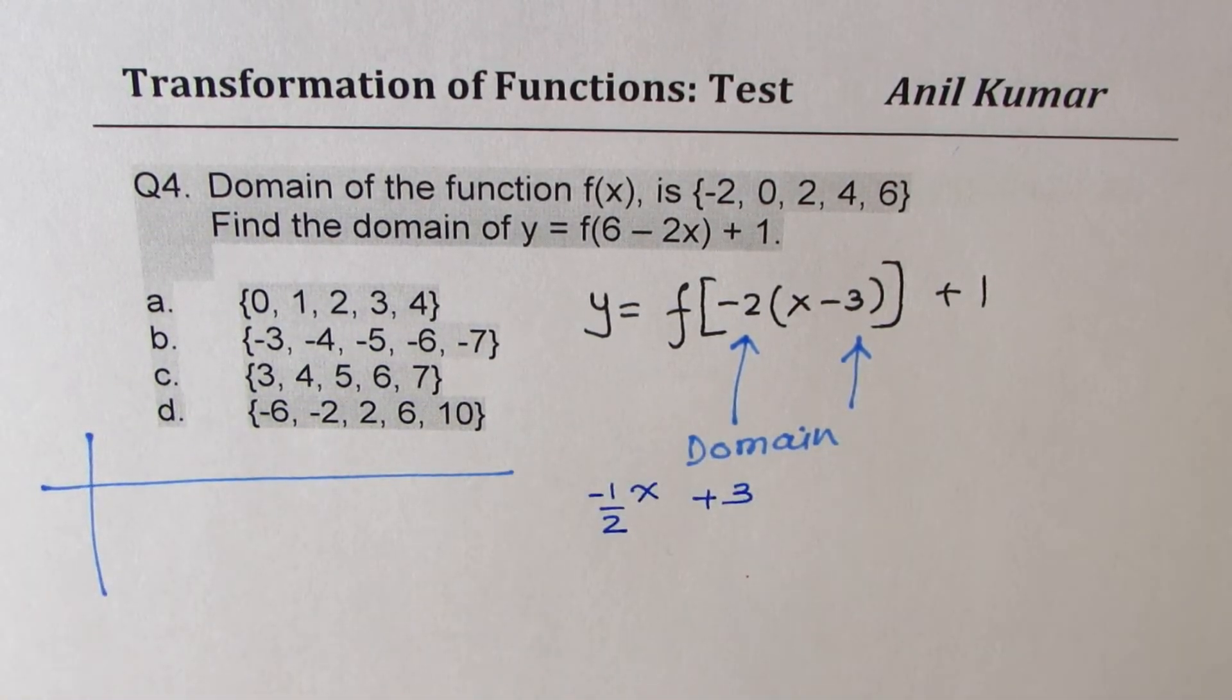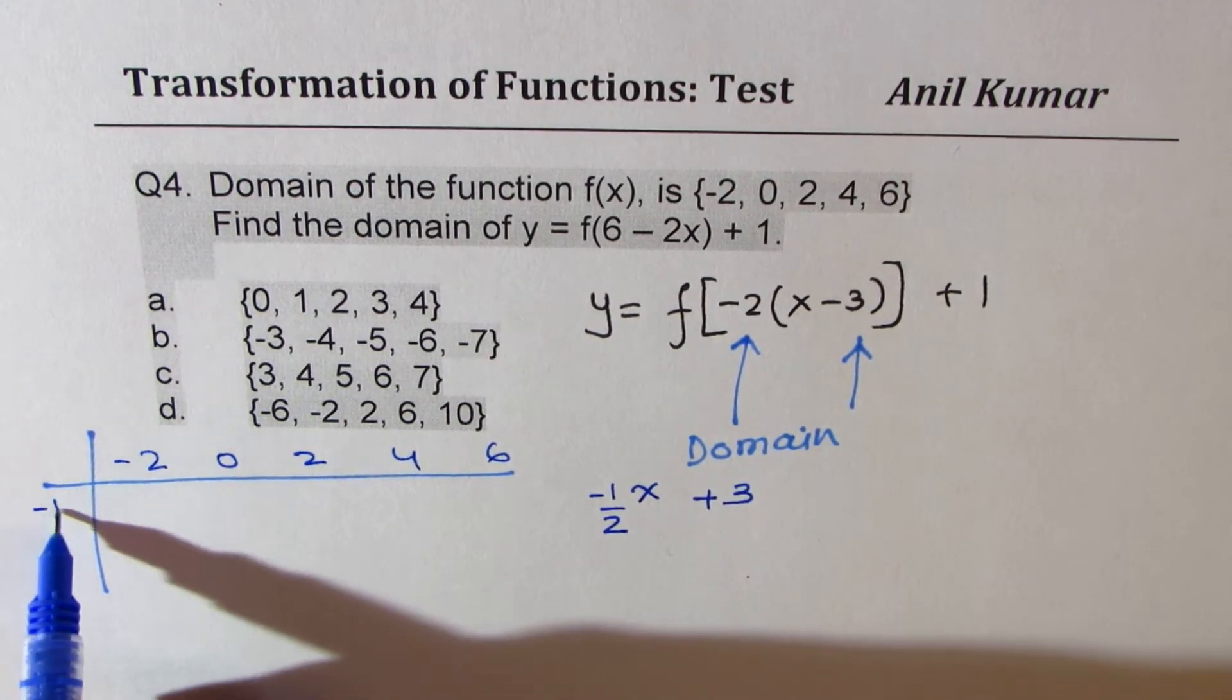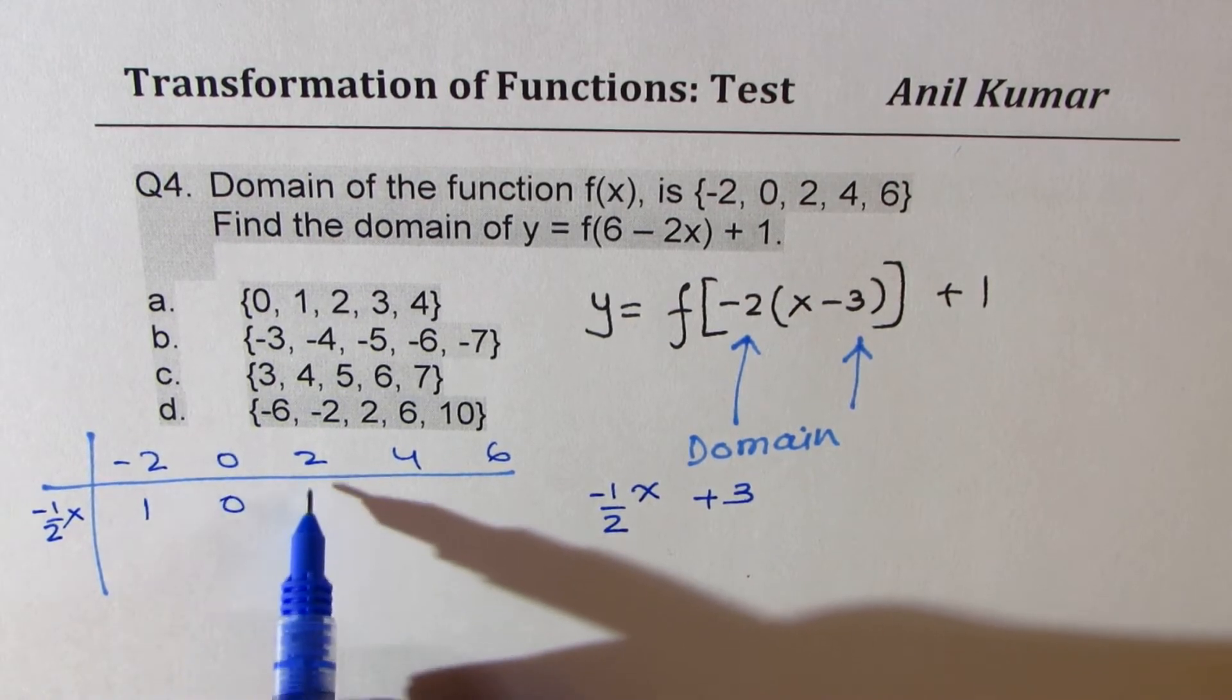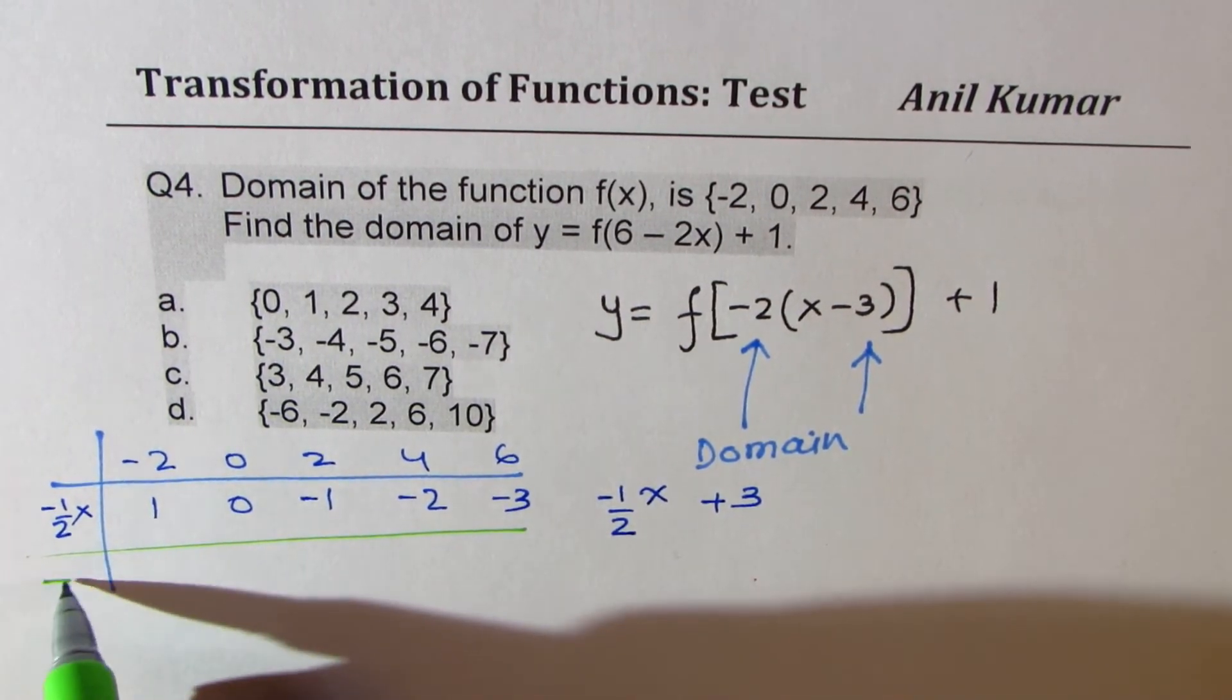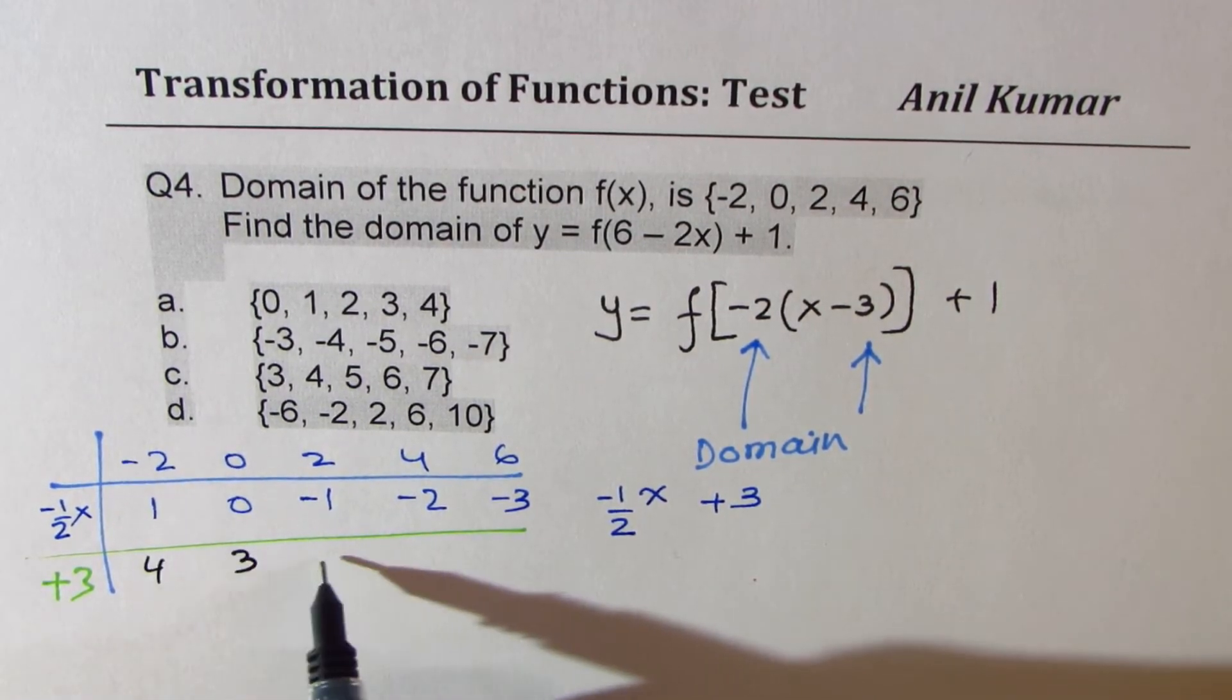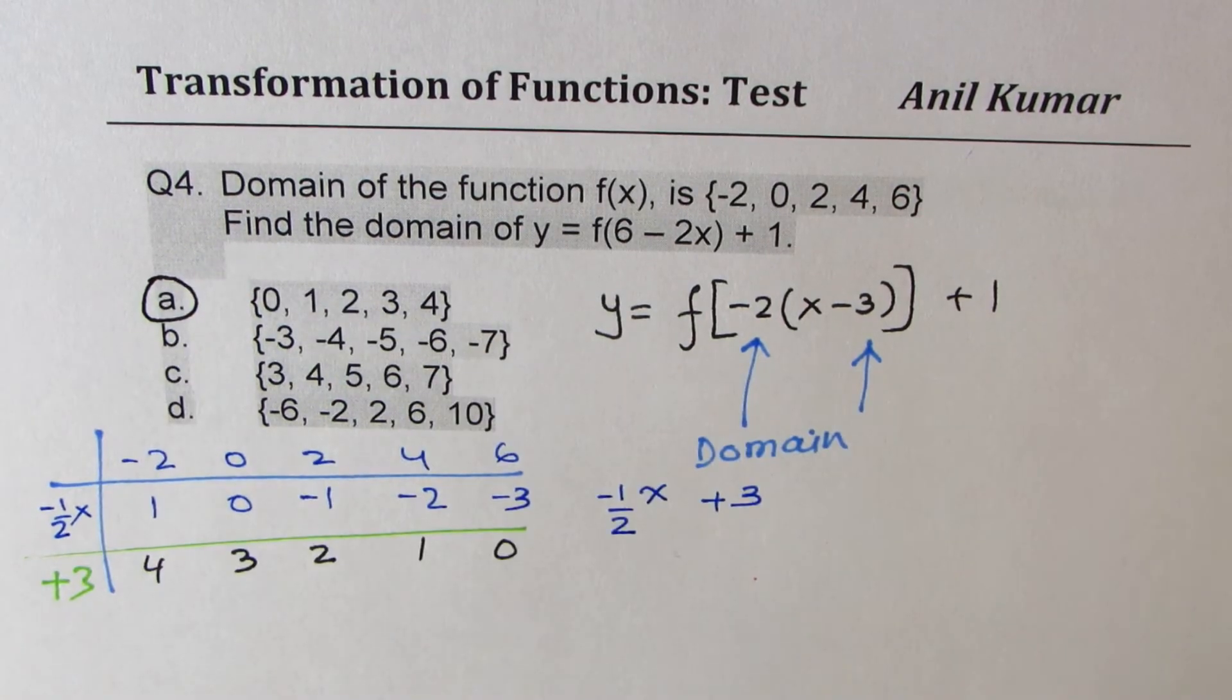So let's do it properly. I'll just show you how to do it. We'll write these values. Minus 2, 0, 2, 4, and 6. So if I do minus half of this value, I get plus 1, 0, minus 1, minus 2, and minus 3. And now, what we should do? We should add 3. So now we'll add 3 to this. So if you add 3, you get 4, 3, 2, 1, 0. So 0, 1, 2, 3, 4 is the right answer, which is option A.